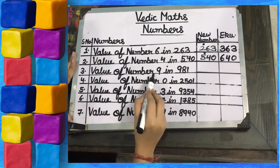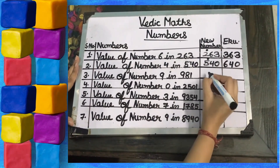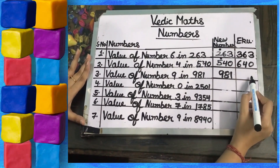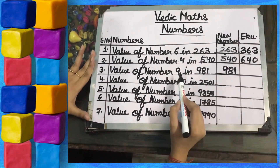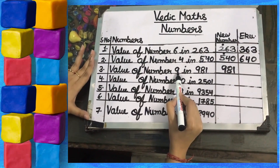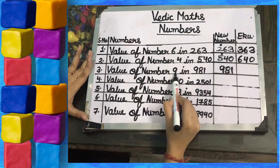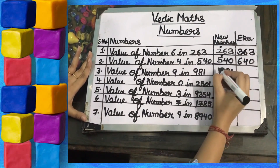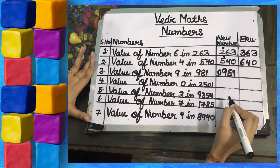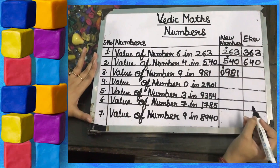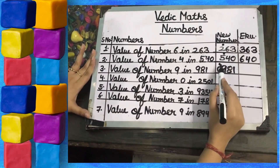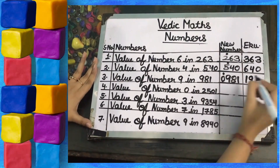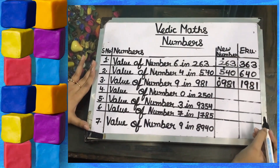Third part — value of number 9 in 981. We write the number 981. We need to find the Ekadiken Purven, which means plus 1 in the previous digit. Finding the previous digit of 9 in 981 — there is no previous digit, so we put 0 as the previous digit. We put a dot on 0; this dot means plus 1, so 1 plus 0 is 1. The 9, 8, and 1 all remain the same.